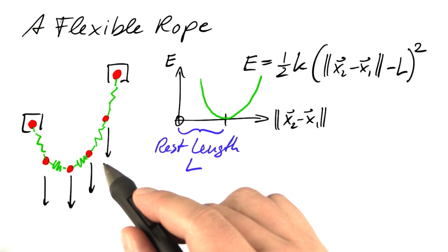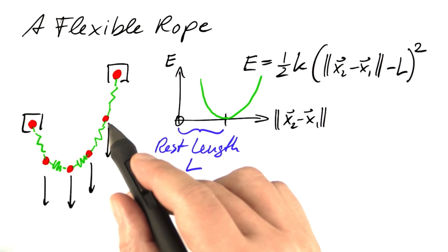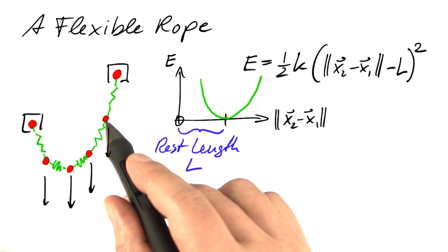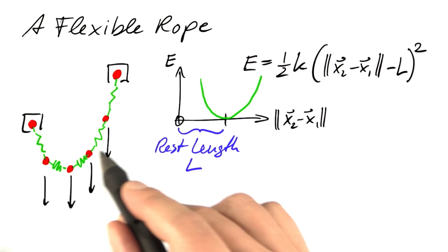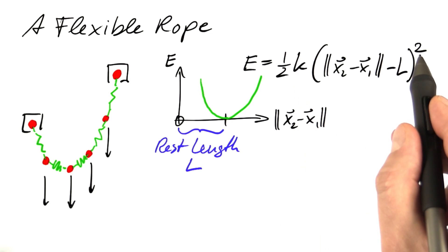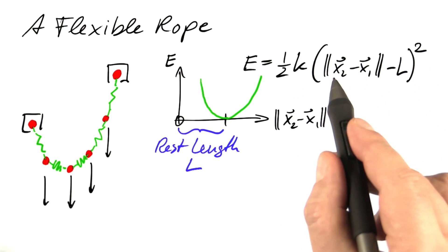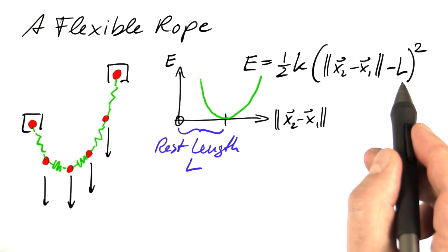The obvious choice of finite elements is springs. Springs of a given rest length, so that the potential energy of each spring amounts to one-half times the spring constant times the square of the extension of the spring, which is the distance between the two endpoints minus the rest length of the spring.